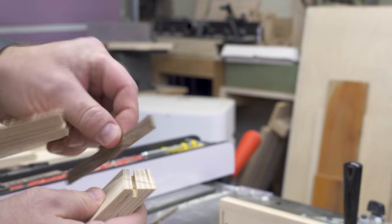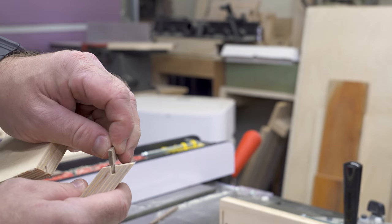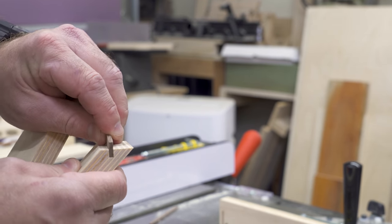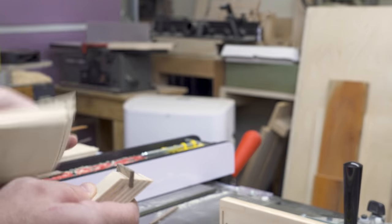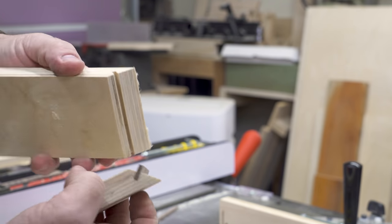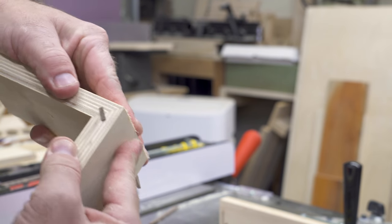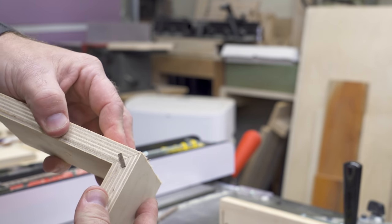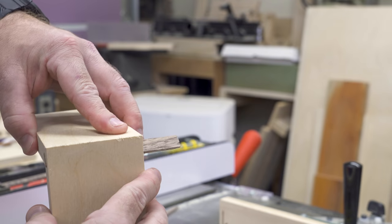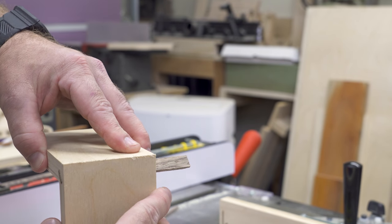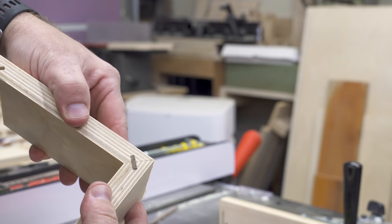I've already shown you guys how to cut spline material. So I will leave links to those videos. But as you can see, if we cut our internal spline material, we can put glue in here, put glue in here, glue this whole thing up together. And now we have a nice strong internally splined hidden miter. And we end up with a nice clean finish on the outside, but we strengthened it up on the inside.